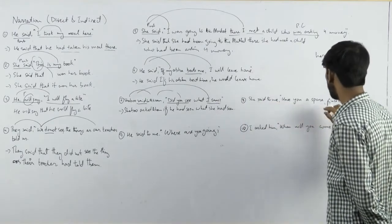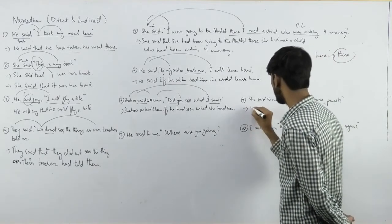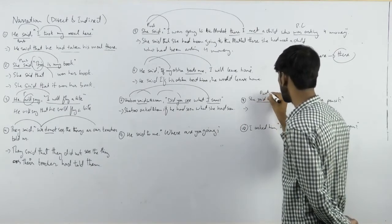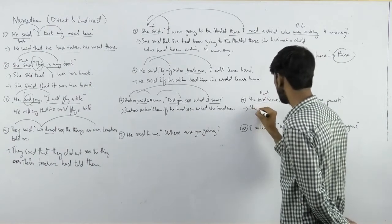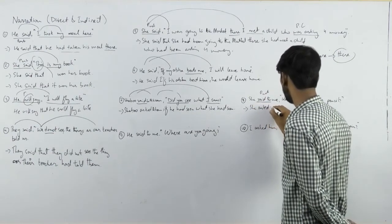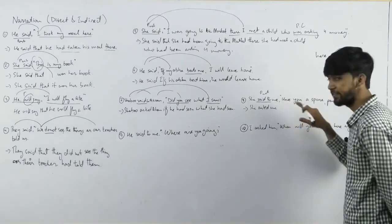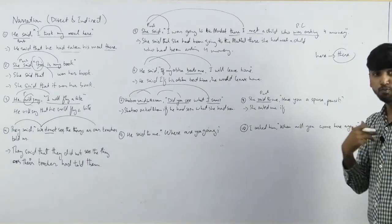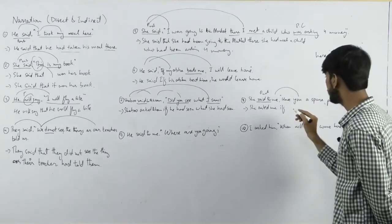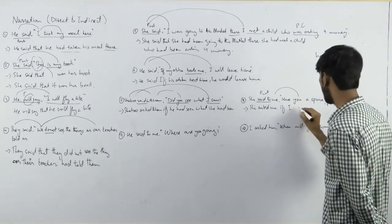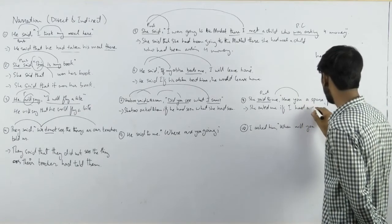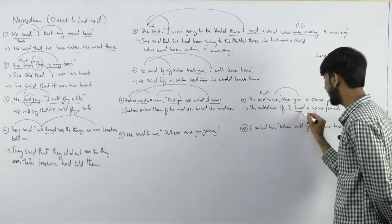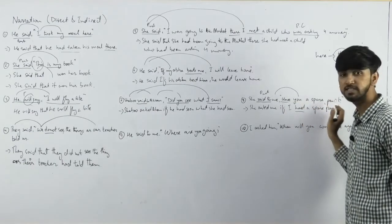She said to me, 'Have you a spare pencil?' She asked me if I had a spare pencil. The present tense changes to past. The interrogative sentence is converted using 'if,' and the word order becomes that of a simple assertive sentence.